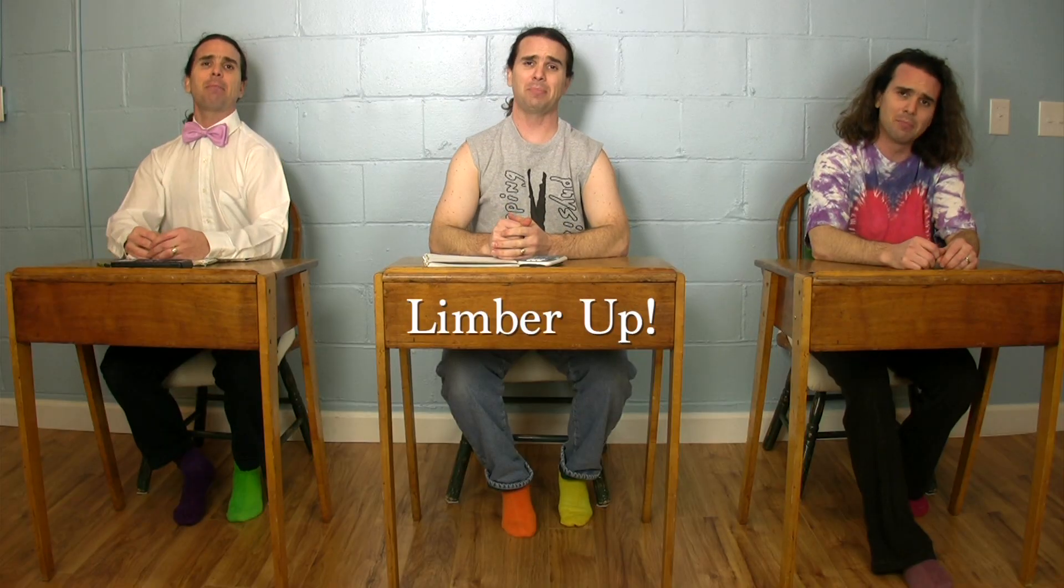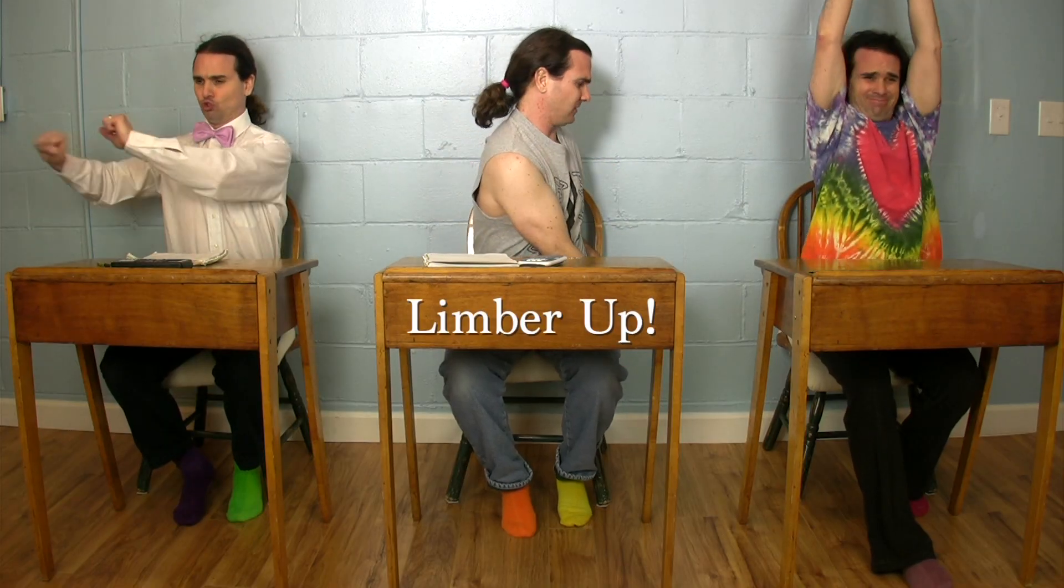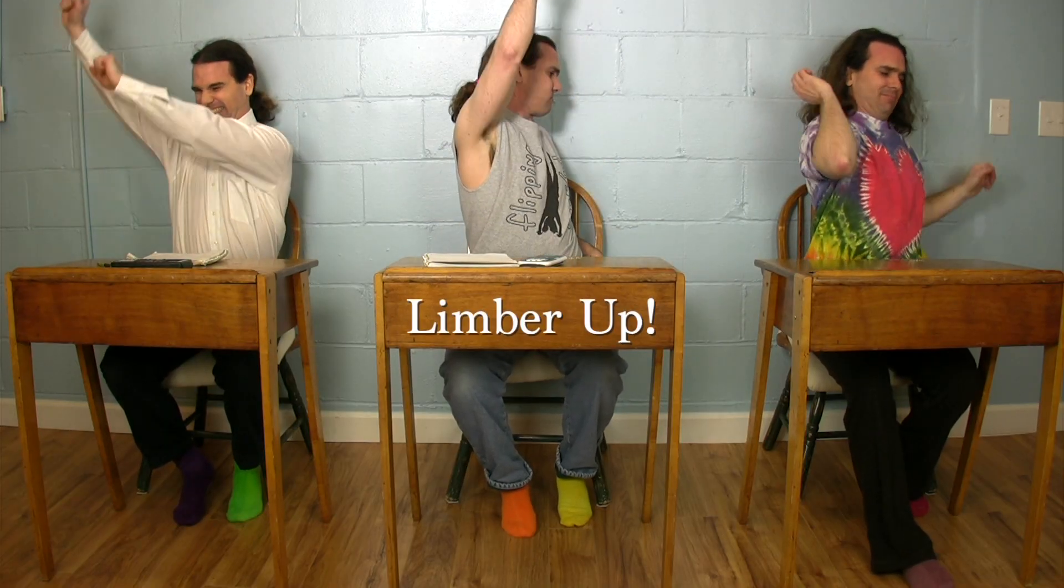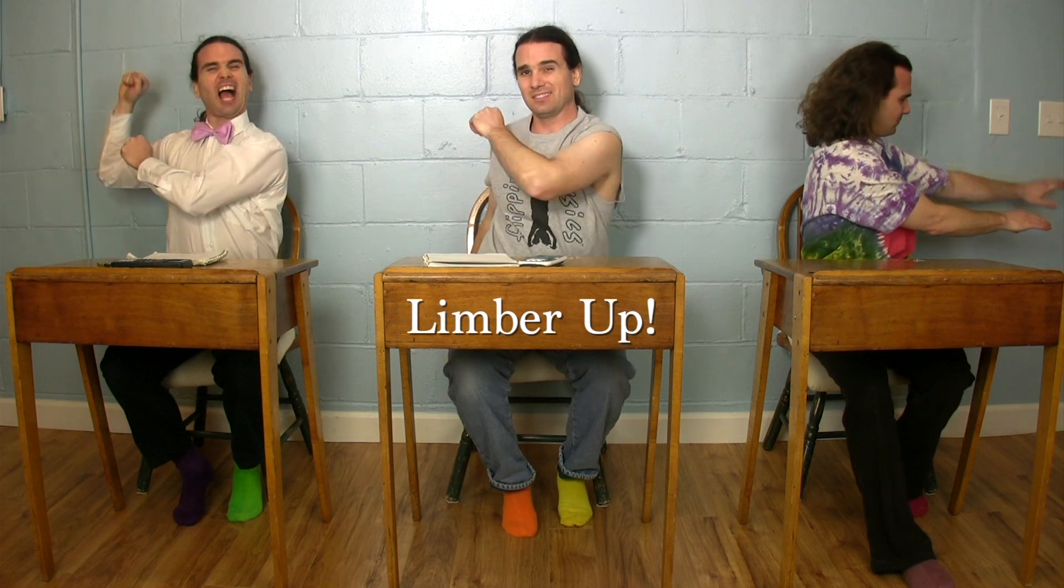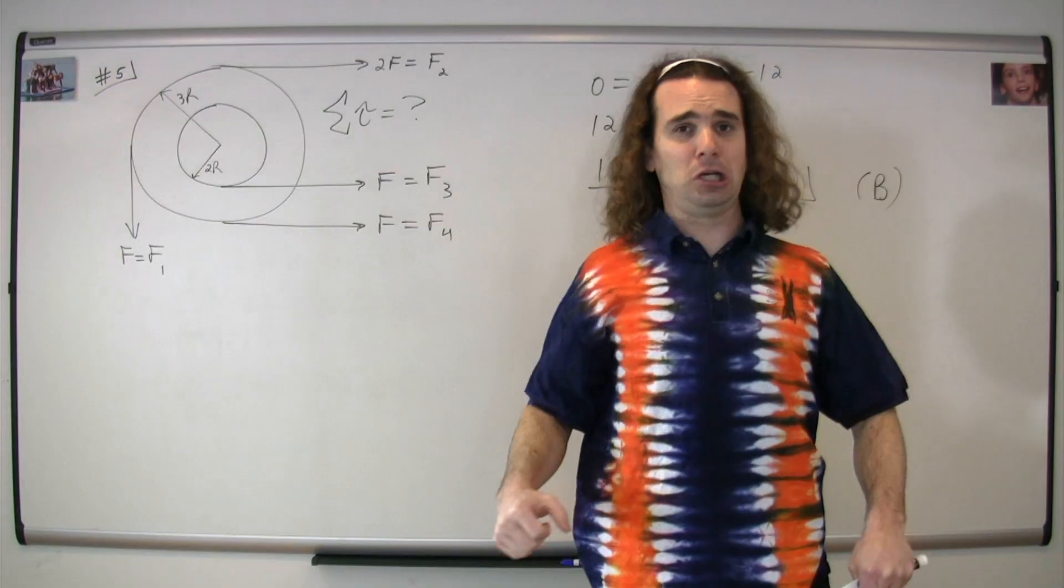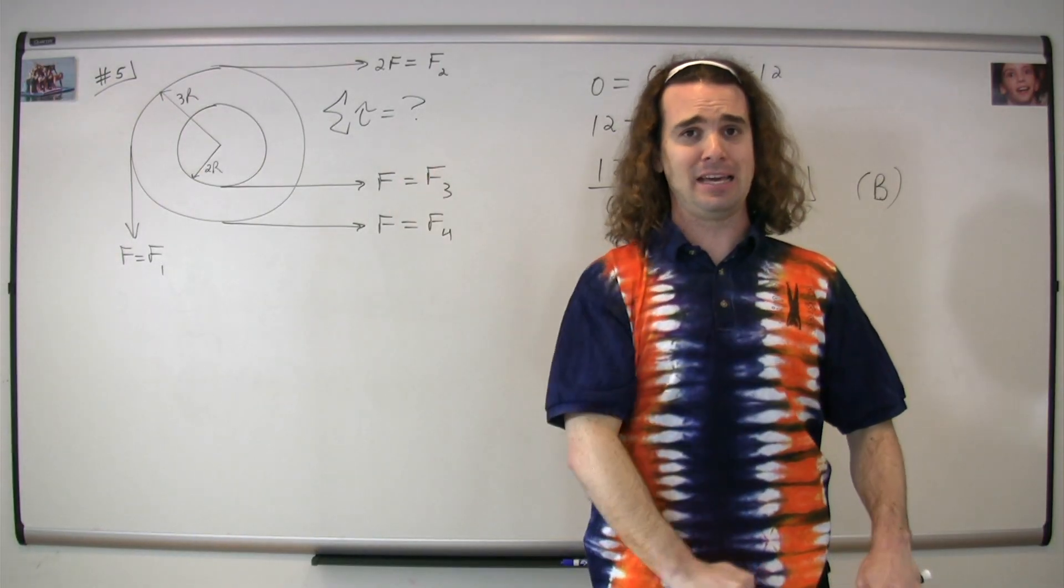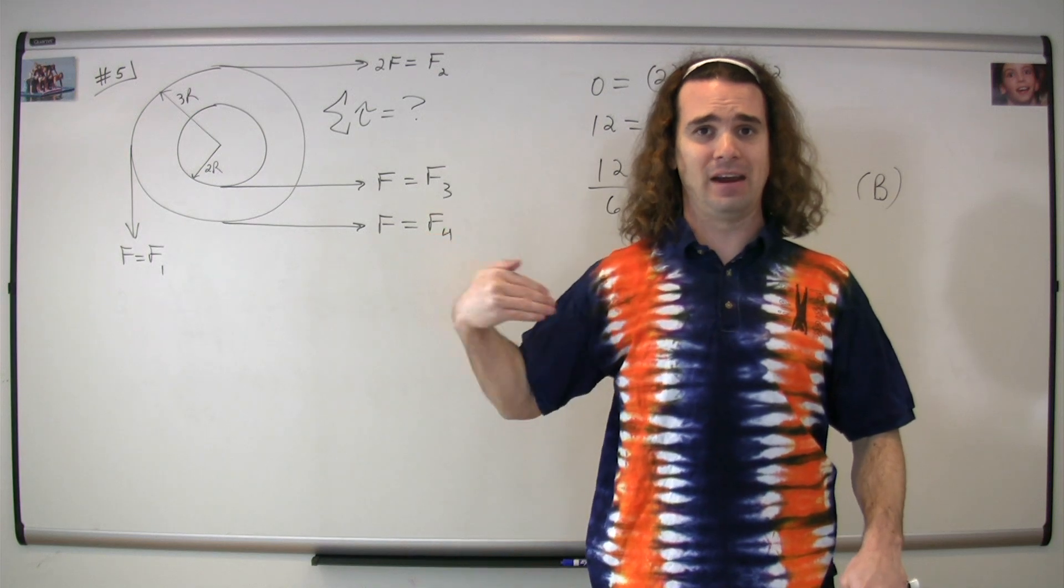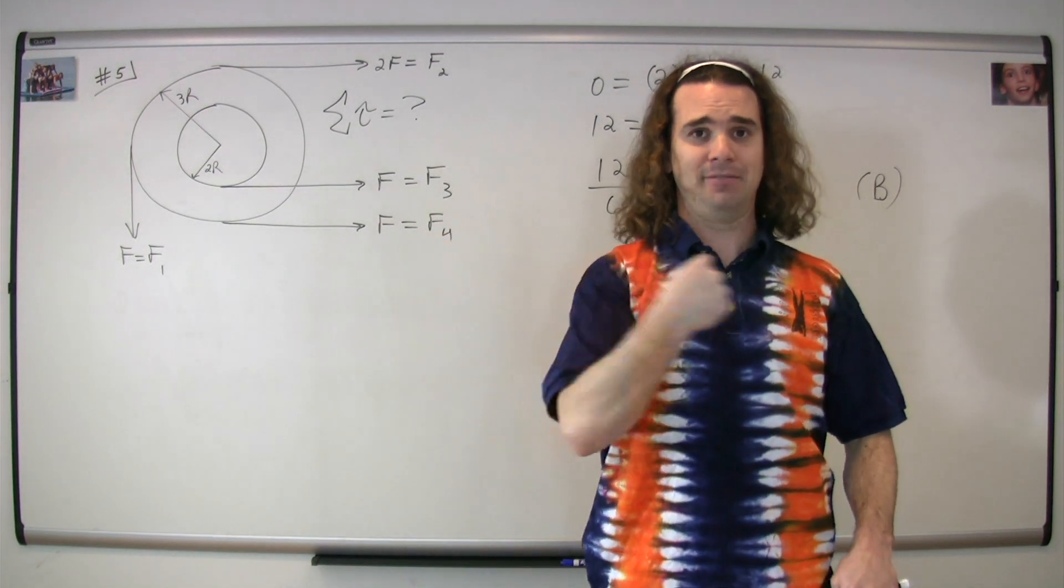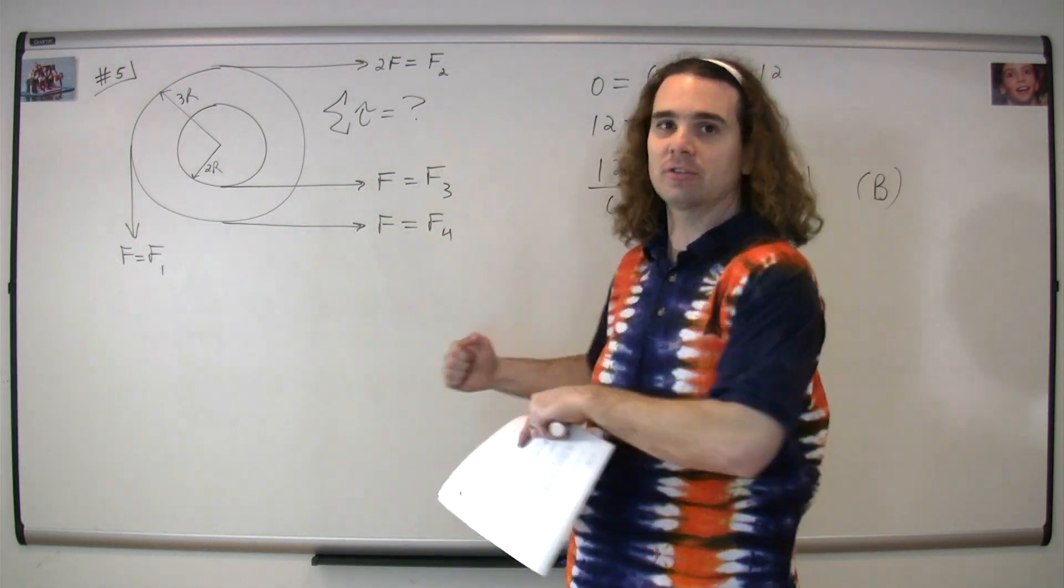Step number three, limber up. That's right, you got to limber up in order to not be too cool. You got to be able to move your shoulders. You don't want to look like this, because when you look like this, you are too cool for the right hand rule. You have to move the shoulders. Limber.